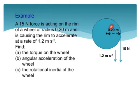Here is a wheel being turned by a force of 15 newtons on its rim, and its translational acceleration is 1.2 meters per second squared.